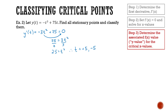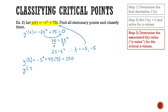Next, I'm going to determine the vertical y values for these critical t values. I'll take the original equation and substitute my t values. For t equals positive five: y equals negative five cubed plus 75 times five, which gives 250. For t equals negative five: y equals negative times negative five cubed plus 75 times negative five, which gives negative 250.